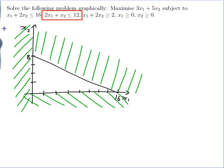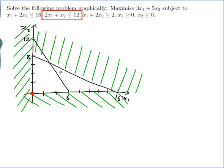If x1 is 0 that gives me x2 is 12, and if x2 is 0 that gives me 2x1 equals 12 so x1 is 6. I join those two to get my line and figure out which side I want. Substituting in the origin: 0 is less than or equal to 12, which is true. So I want the bit below the line and I'll cross out the bit above the line.